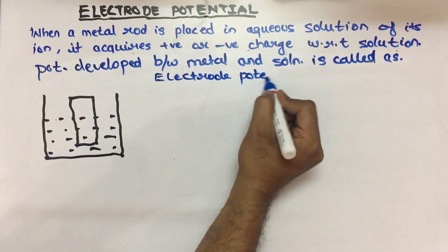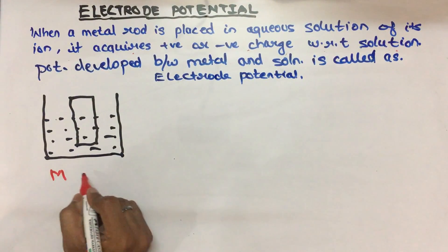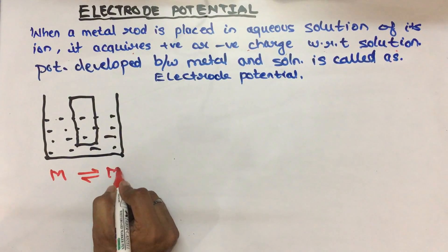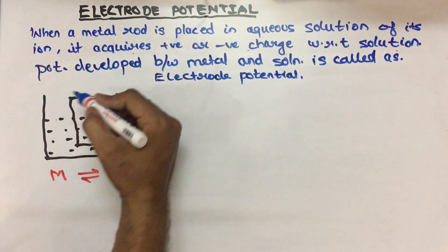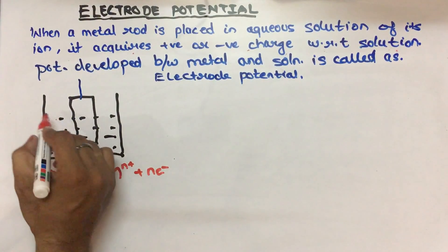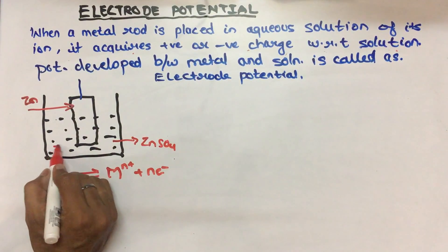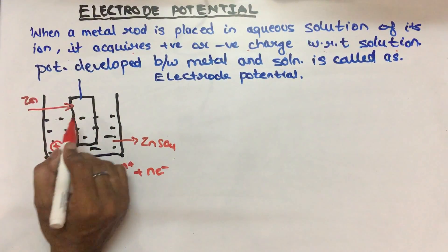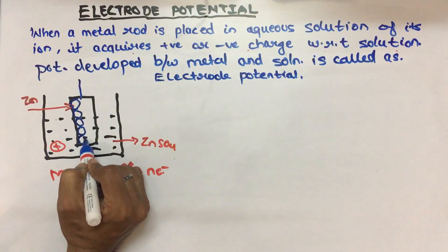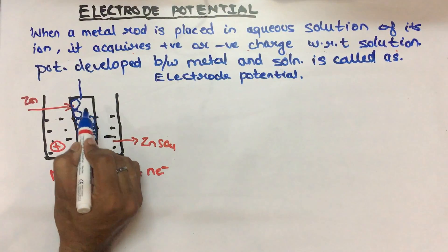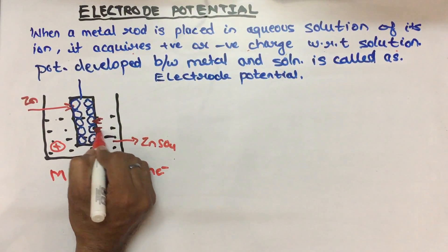When we dip the metal rod in its own solution, a tendency develops — the metal can lose electrons or the metal can gain electrons. For example, suppose we have a zinc rod dipped in zinc sulfate solution. The metal rod is a lattice, and on the surface of this lattice, electrons are present. Metals have a very high tendency to lose electrons, so electrons are at the surface of the metal.